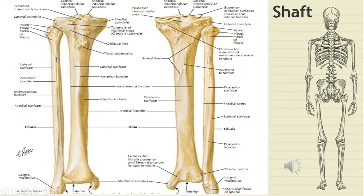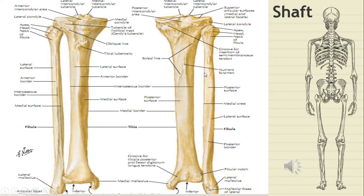These three borders enclose three surfaces. The smallest is the medial surface, which lies between the anterior and interosseous borders — it is a very thin surface. The lateral surface is enclosed between the anterior border and posterior border. The posterior surface is enclosed by the posterior border and interosseous border; it is more of a posteromedial surface. On the medial posterior surface there is a prominent line called the medial crest, which divides the posterior surface into two parts.